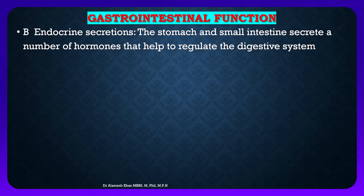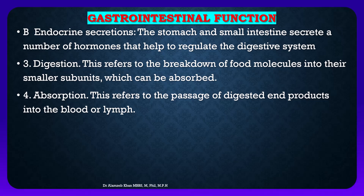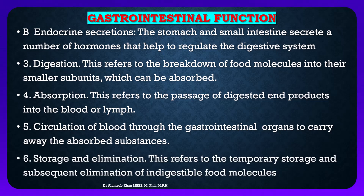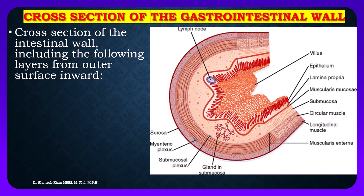Endocrine secretion: the stomach and small intestine secrete a number of hormones that help to regulate the digestive system. Digestion refers to the breakdown of food molecules into their smaller subunits which can be absorbed. Absorption refers to the passage of digested end products into the blood or lymphatic circulation through the gastrointestinal organs, to carry away the absorbed substances.